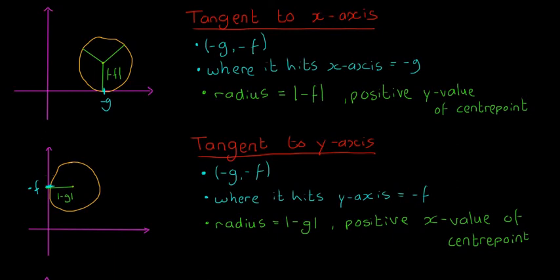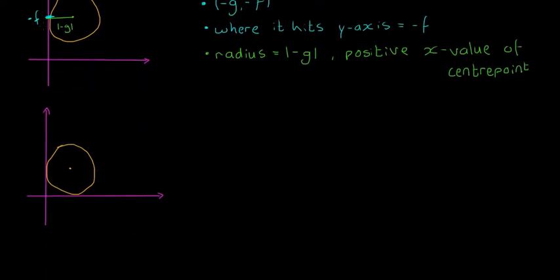If you forget these rules, it's easiest to draw a little diagram and figure it out. To summarise: when tangent to the x-axis, where it hits the x-axis is -g and the radius is the positive y-value. When tangent to the y-axis, where it hits the y-axis is -f and the radius is the modulus of -g. Drawing a diagram is probably the easiest way to remember which is which.